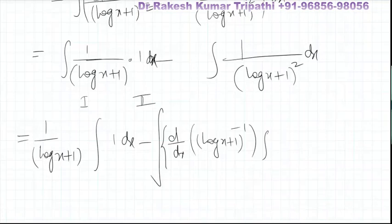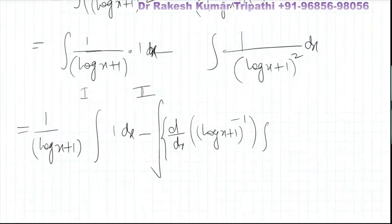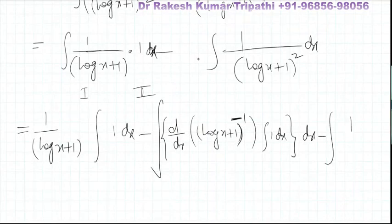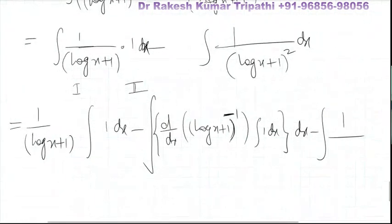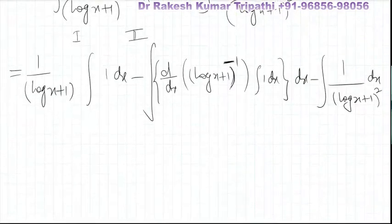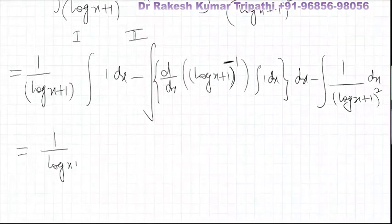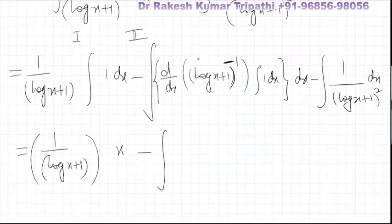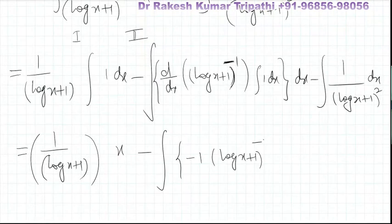We differentiate (log(x) + 1) to the power minus one directly without the quotient rule. The integral of one dx is x. Then minus: derivative of (log(x) + 1) to the power minus one gives minus one times (log(x) + 1) to the power minus two, into the integral of one dx, which is x.